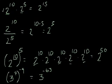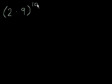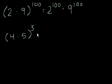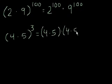Now I'm going to teach you one final exponent property. If I have 2 times 9 and I raise that whole thing to the 100th power, it turns out that this equals 2 to the 100th power times 9 to the 100th power. Let's make sure that makes sense with a smaller example. What if it was 4 times 5 to the third power? That would just be equal to 4 times 5 times 4 times 5 times 4 times 5.